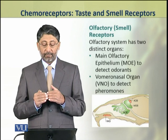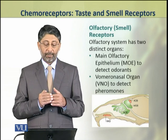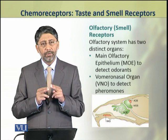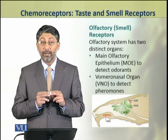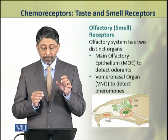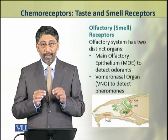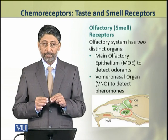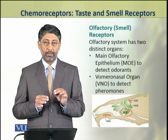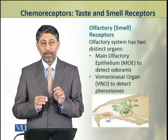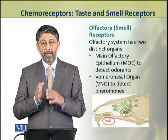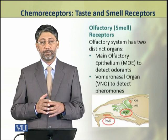The vertebrate olfactory system contains two different types of organs. The first is called the main olfactory epithelium, which detects odorants. The second is called the vomeronasal organ, which detects pheromones.